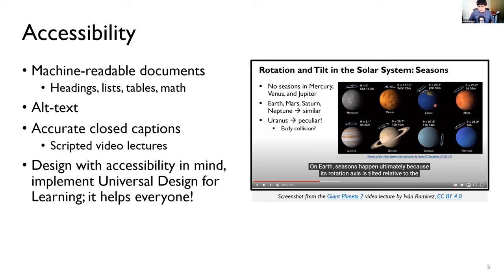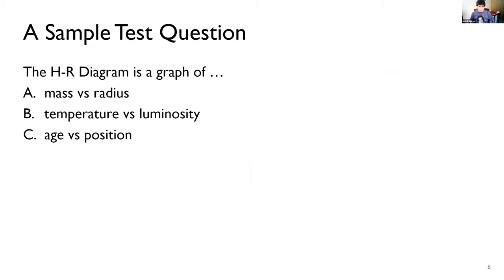One very important thing about accessibility is that it's a practice that helps everyone, not only people with disabilities, even though that is the main motivation. Some time ago I encountered a question that looked like the one I'm showing on the slide: 'The HR diagram is a graph of — A: mass versus radius, B: temperature versus luminosity, C: age versus position.'